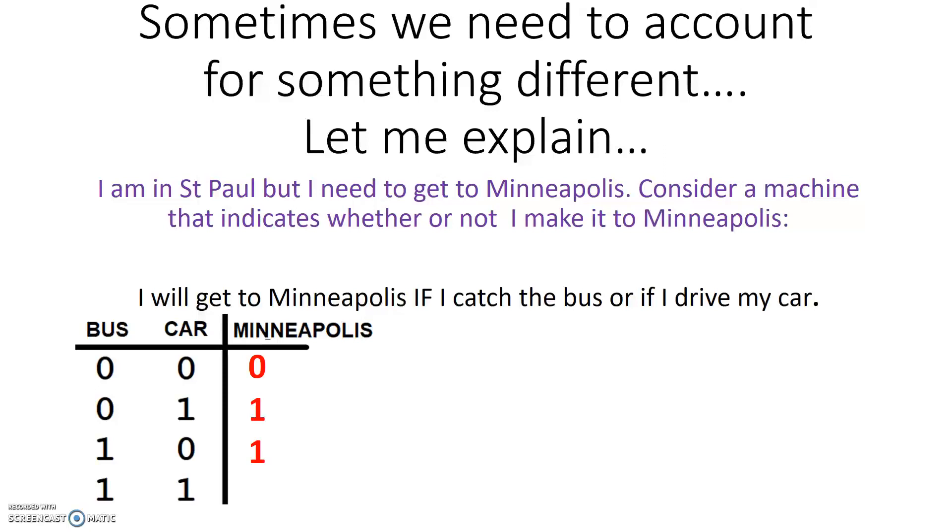We were seeing a one at the output any time one of the input was being true. The final case of the OR gate would have been one as well. But, in this particular case, because it does not make sense that I would end up safely in the Minneapolis campus if I somehow took the bus and drove the car at the same time, that logic does not make sense. So, in order to account for these kind of scenarios, we have a special type of gate called the exclusive OR gate.